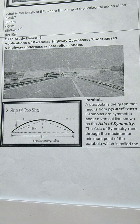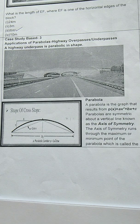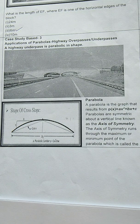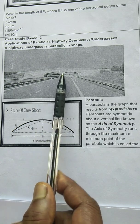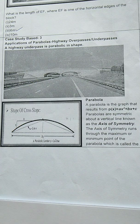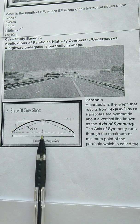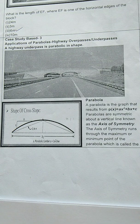A highway underpass is parabolic in shape. A parabola is the graph that results from ax squared plus bx plus c. Parabolas are symmetric about a vertical line known as the axis of symmetry. The axis of symmetry runs through the maximum or minimum point of the parabola, which is called the vertex.